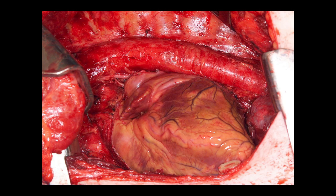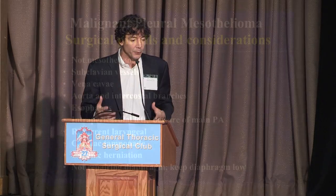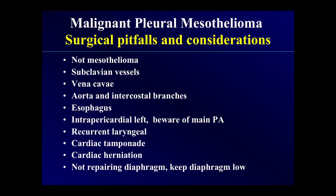As surgeons, a key pitfall — whether doing EPP or pleurectomy — is to make sure it is actually mesothelioma from the beginning. When you tell me a mesothelioma patient survived 12 years, my first question is: are you sure that was really mesothelioma? You have to make sure you have appropriate immunohistochemical stainings and electron microscopy before embarking on a mesothelioma case.